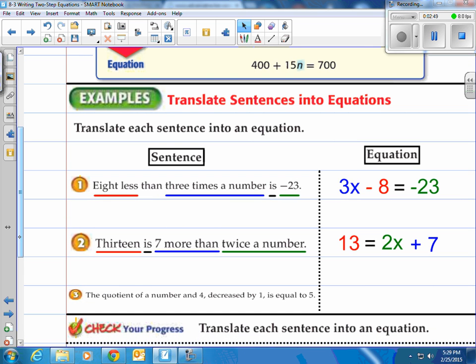How about number 3? The quotient of a number and 4 decreased by 1 is equal to 5. The quotient means dividing, and decreased means minus. So we have the quotient of a number and 4, which is n divided by 4, represented as a fraction. Now we're going to decrease by 1, so minus 1, is equal to 5. That is the quotient of a number and 4, decreased by 1, equals 5.